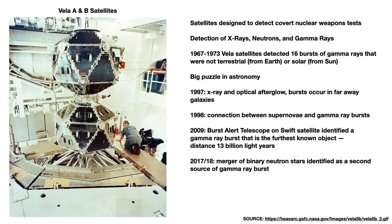The breakthrough finally happened in 1997, when a specialized satellite called BeppoSAX detected a gamma-ray burst, quickly trained an X-ray camera on it, and observed an afterglow. The William Herschel Telescope was quickly pointed in the same direction and saw an optical afterglow before it completely faded. This allowed astronomers to measure how far away the burst occurred, and it became clear that these bursts occur in far, far away galaxies. By 1998, there was a solid connection between supernovae and gamma-ray bursts. In 2009, the Burst Alert Telescope on the Swift satellite identified a gamma-ray burst at a distance of 13 billion light-years. One of the most recent developments is the observation in 2017 and 2018 that mergers of binary neutron stars can be identified as a second source of gamma-ray bursts, in addition to supernovae.